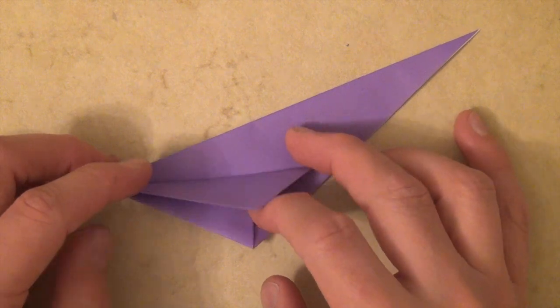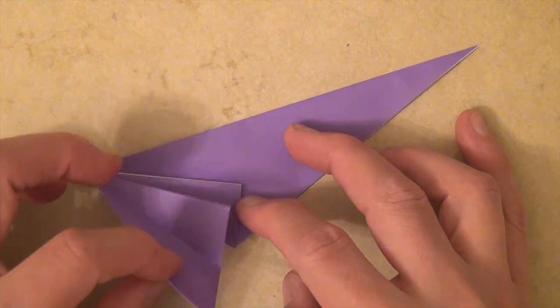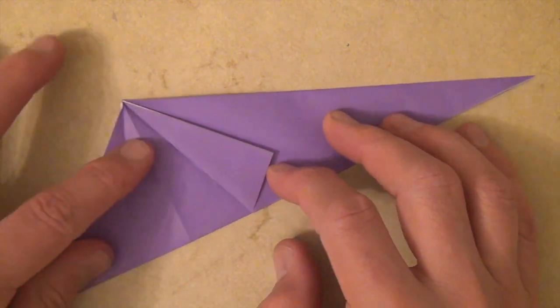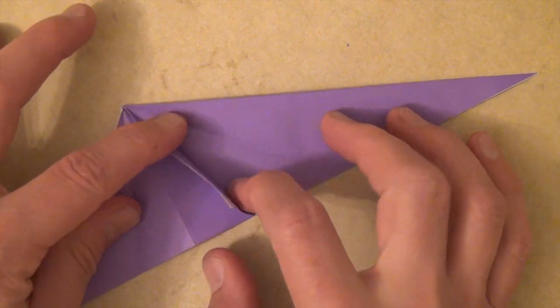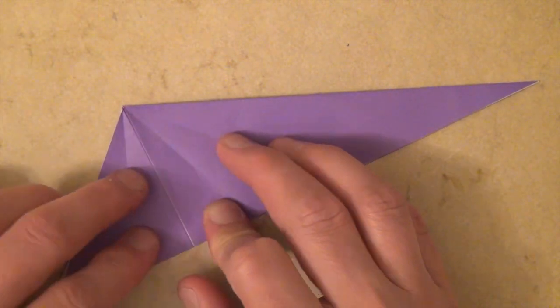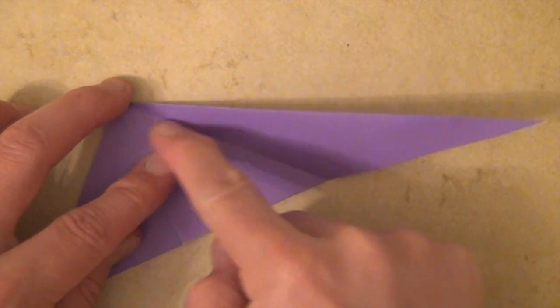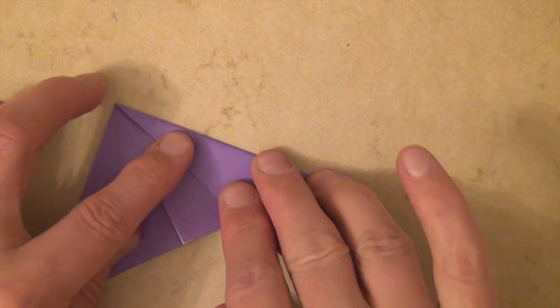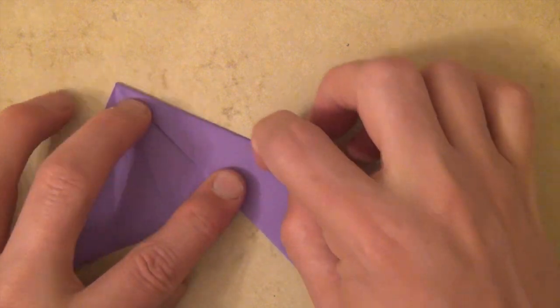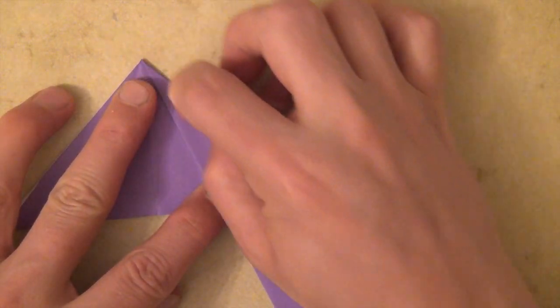Now let's unfold this whole flap right here. Just pull it down, pull it out, and let's unfold this flap. And now let's fold this flap down on this crease and crease it again.